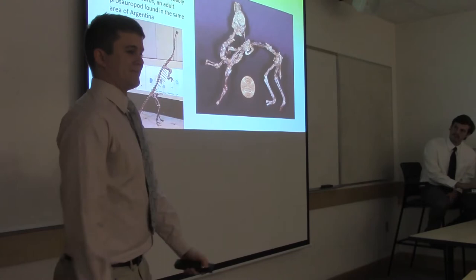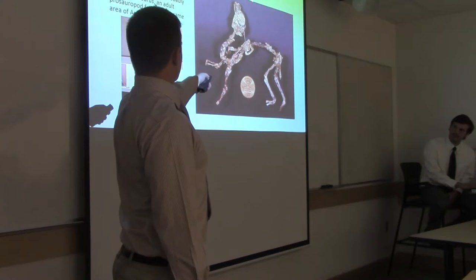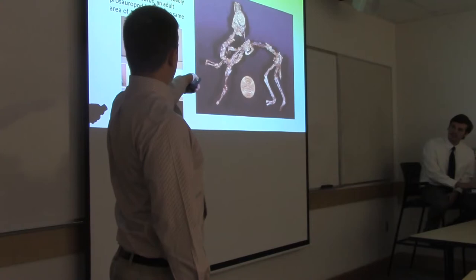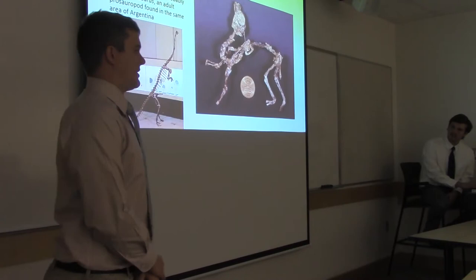You can see that the ratio of the skull to the length of the body is radically different. And even the size of the eye, which takes up most of the skull in the juvenile, is just a very small portion of the adult skull.